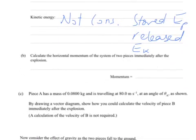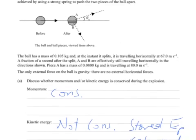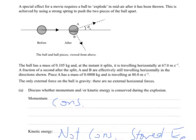Part B: calculate the horizontal momentum of the system of two pieces immediately after the explosion. Well, it's probably the same as the initial momentum if it's conserved. The ball, the total ball is 0.105 kilograms times by 67.